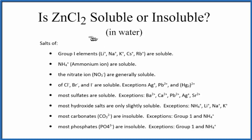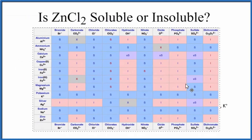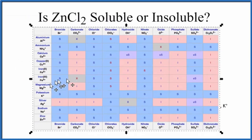Looking at the solubility rules, we have the chloride ion — those are in general soluble, with a few exceptions. Zinc is not an exception. So according to the solubility rules, because we have this chloride ion, zinc chloride will be soluble in water.